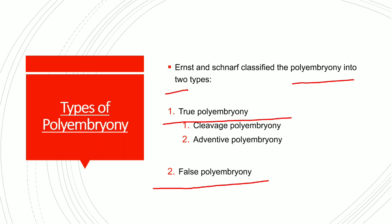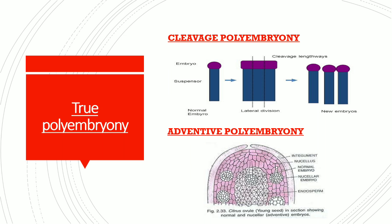What is true polyembryony? True polyembryony refers to the production of embryos that takes place within, or by projecting into, a single embryo sac.